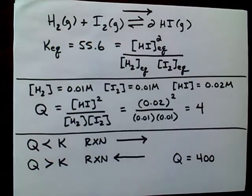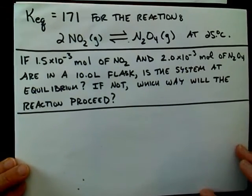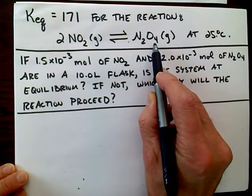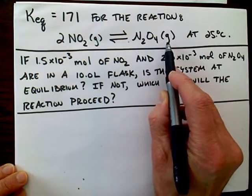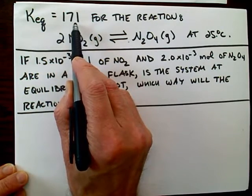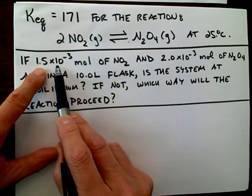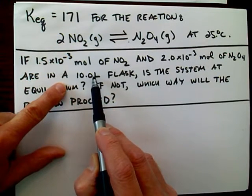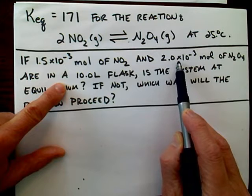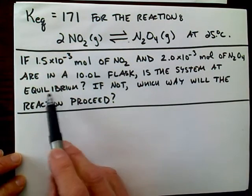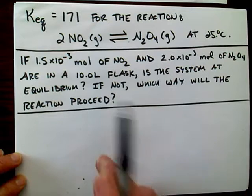With this knowledge, let's do a particular problem. We have a reaction where two moles of nitrogen dioxide gas go to one mole of dinitrogen tetroxide gas at 25°C, and the equilibrium constant value for this reaction is 171. We do an experiment: we take 1.5 × 10⁻³ moles of NO₂ and put them in a 10-liter flask, along with 2 × 10⁻³ moles of N₂O₄. We ask: is this system at equilibrium, and if not, which way is the reaction going to go?